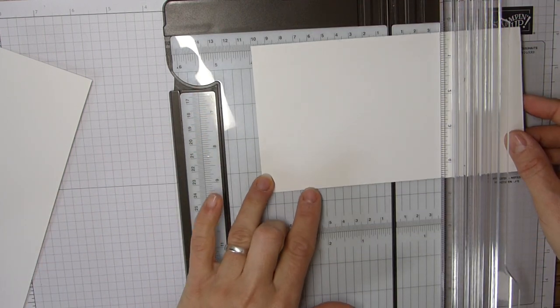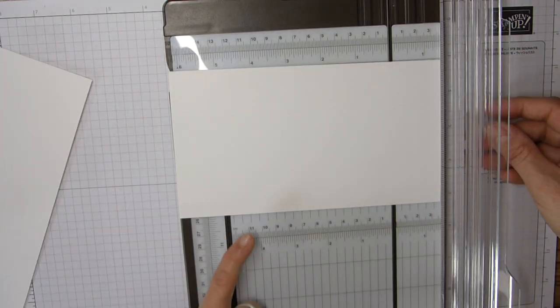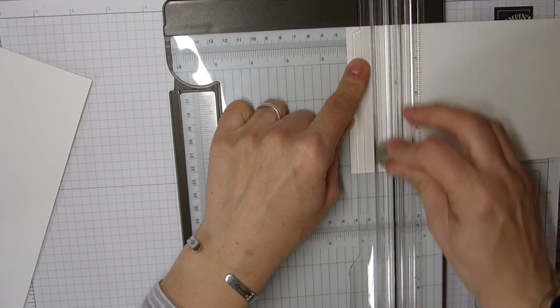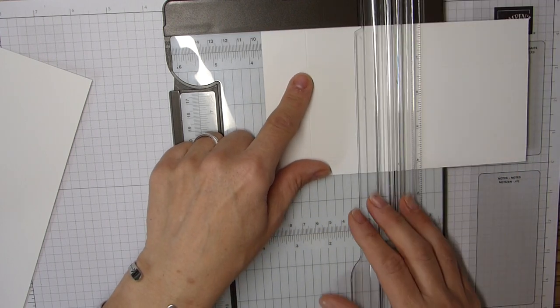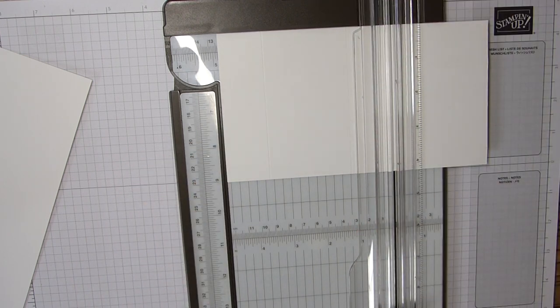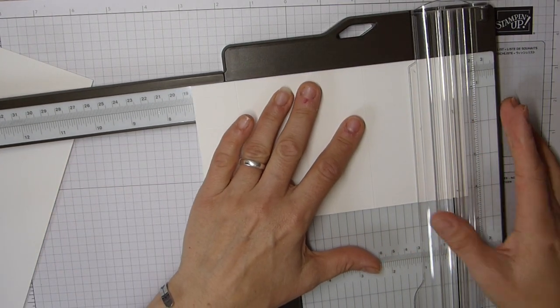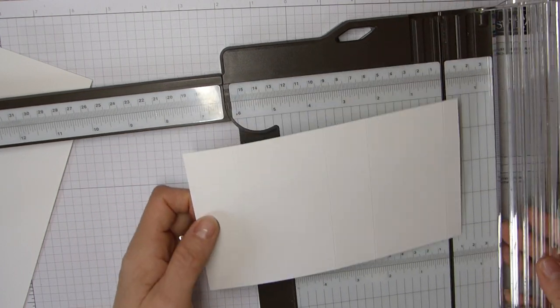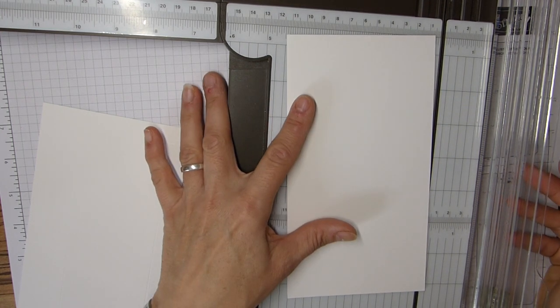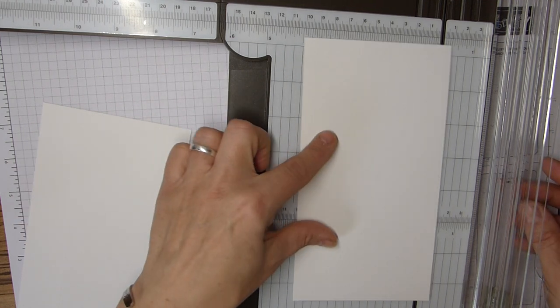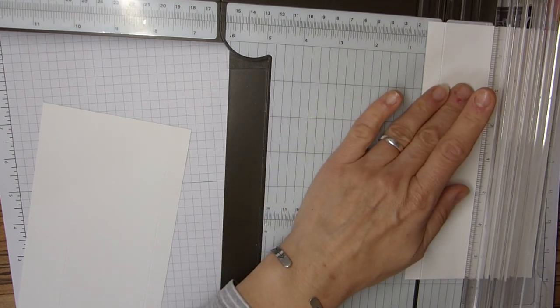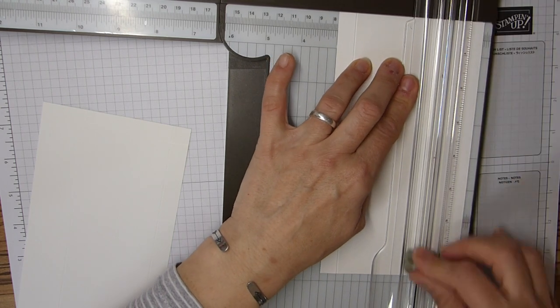We're then going to rotate it so that the thinner end is at the bottom and then we're going to score the long side at one and a quarter inch, three and five eighths of an inch, four and seven eighths of an inch, and then seven and a quarter. All of these measurements will be on my blog so don't worry if you're missing them now. I'm going to do exactly the same for the second piece.